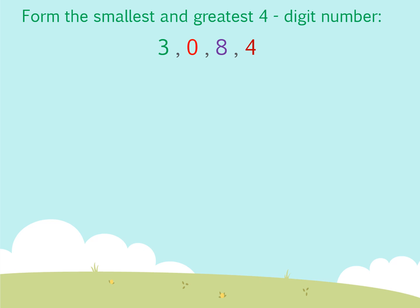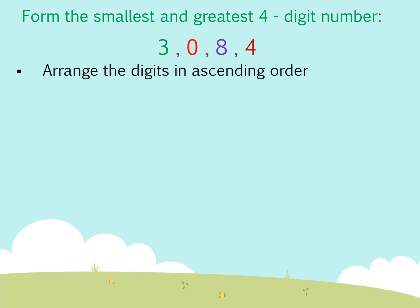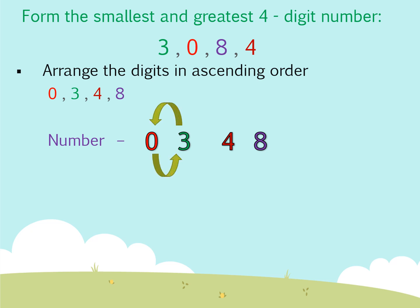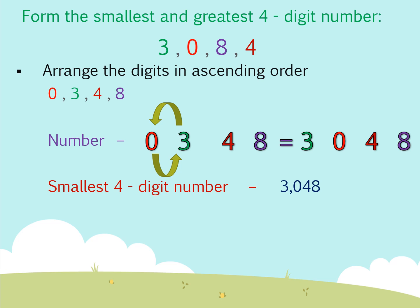Now let us solve one more example to understand it in a better way. Look at the digits 3, 0, 8, 4. You have to form the smallest and greatest 4-digit number using these 4 digits. To form the smallest number, we arrange these digits in ascending order: 0, 3, 4, 8. But this number is a 3-digit number because it starts with 0. Therefore we interchange the position of the first two digits, that is 0 and 3, to get the smallest 4-digit number, which is 3048.